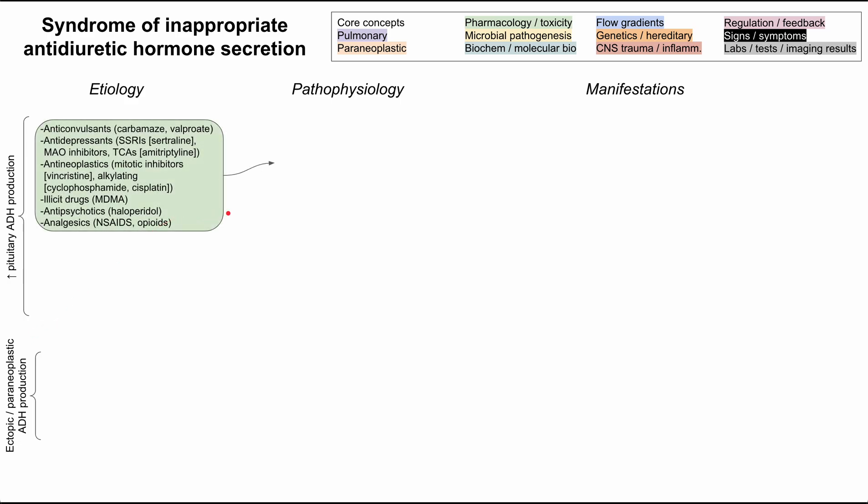There are a number of medications that increase pituitary ADH production. First, there are anticonvulsants, including carbamazepine and valproate. Some antidepressants can do it across multiple classes — SSRIs such as sertraline, MAO inhibitors, and tricyclic antidepressants like amitriptyline.